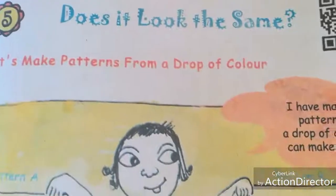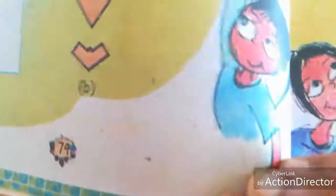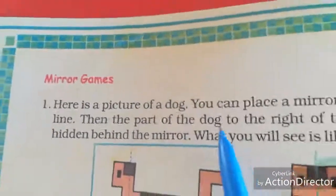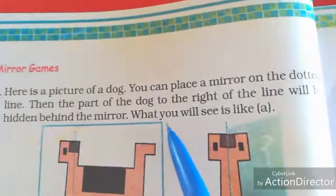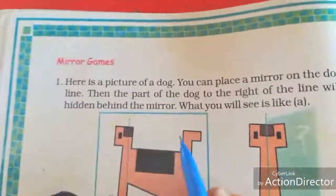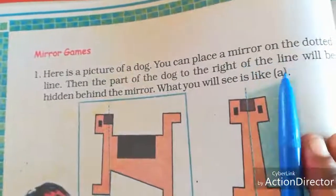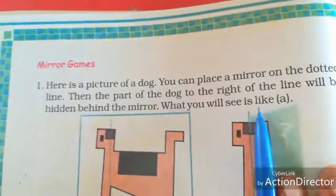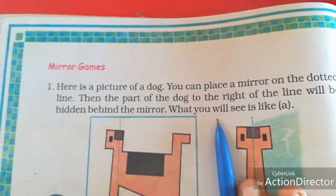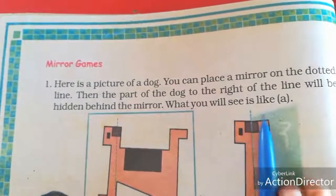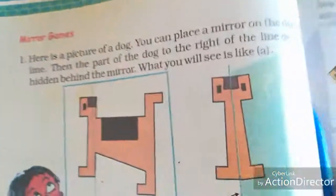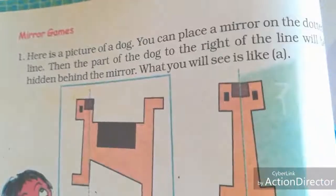Now open your book to page number 74. Look at here — Mirror Games. Here is the picture of a dog. You can place a mirror on the dotted line. Then the part of the dog to the right of the line will be hidden behind the mirror. What will you see? Like A.